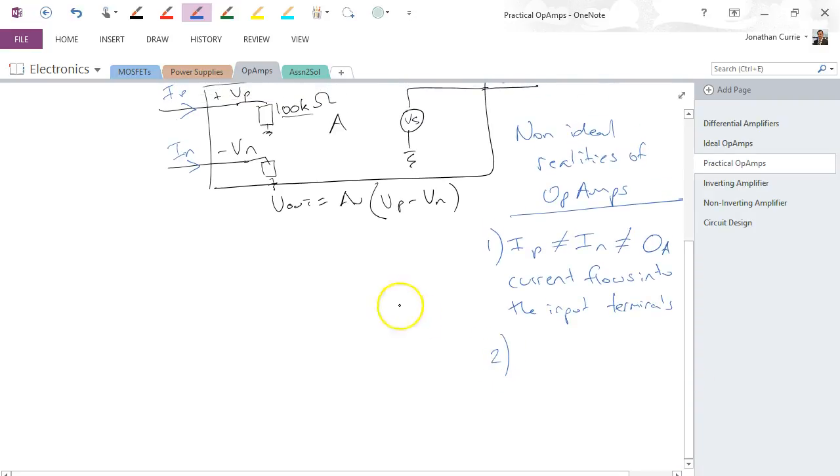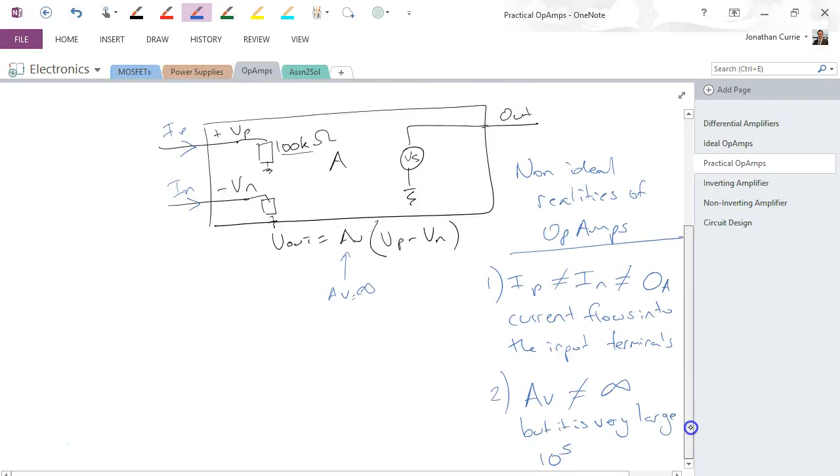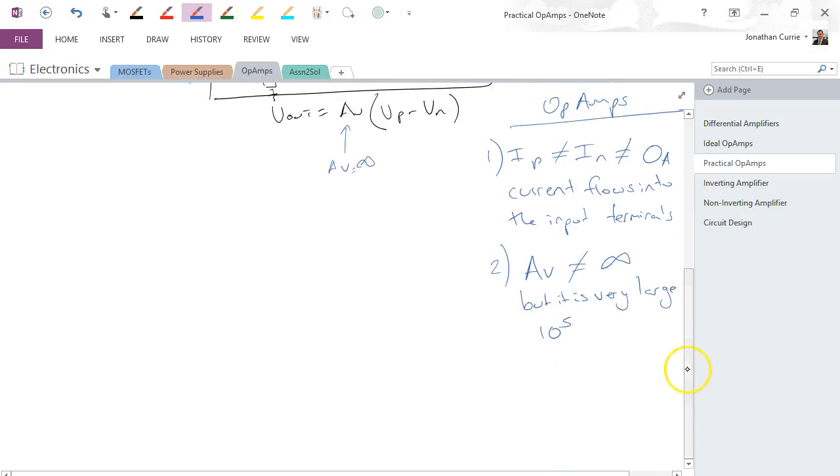Two, what I told you before was that AV was approximately infinite, so it has a really high value. In reality, the voltage gain is not infinite, but it is very large, and it's in the order of, depending on the op-amp you buy, 10 to the 5, for example. So it is very, very large, but it is still not infinite.